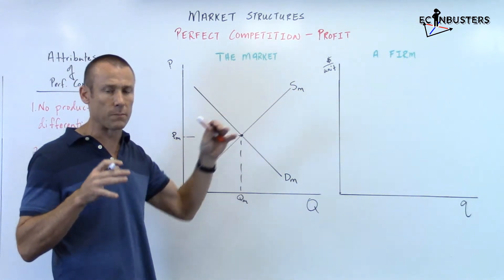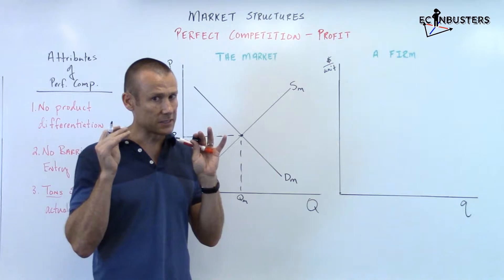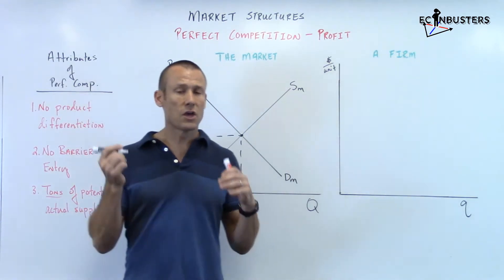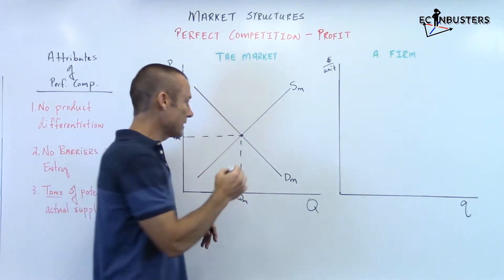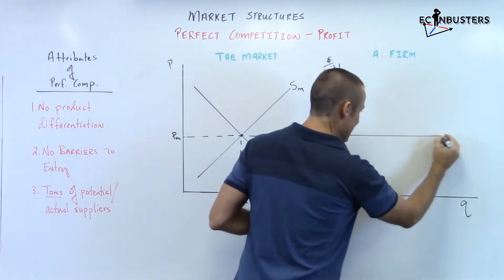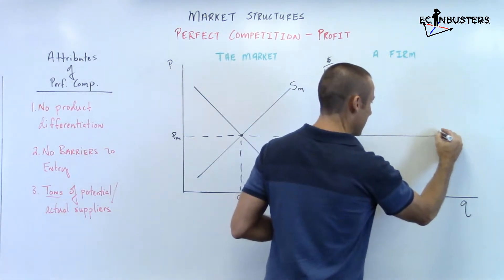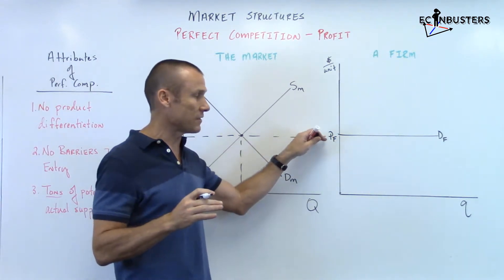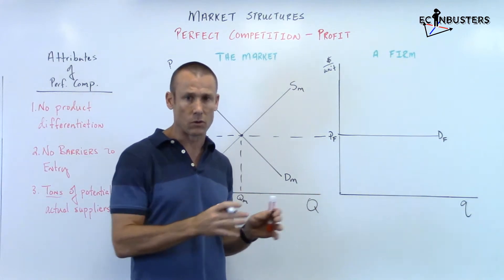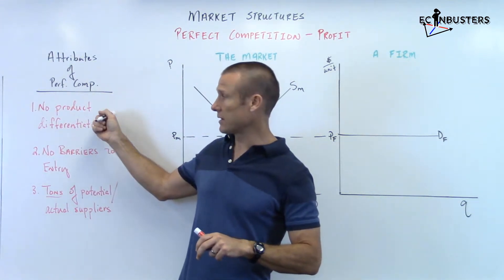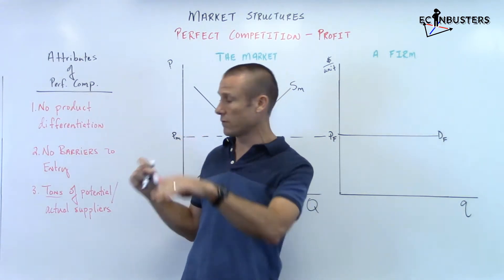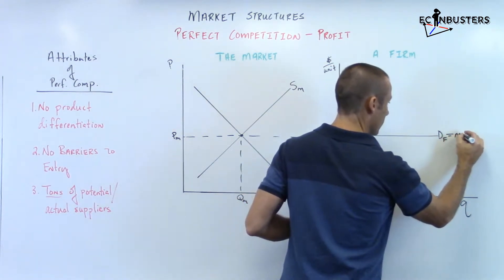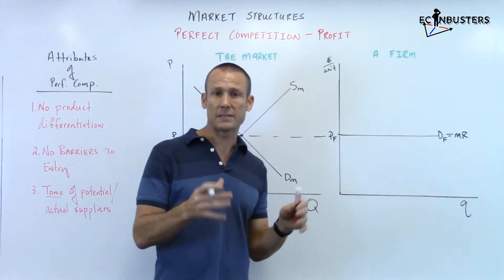That market price is sometimes called equilibrium price or market clearing price. Since there is no product differentiation — firms are selling the exact same good as everybody else — and because there are tons of potential and actual suppliers, they have no power over price. They are a price taker. We draw this price across as the price the firm faces, and that is not just the price — it's also the demand curve the firm faces: perfectly elastic.